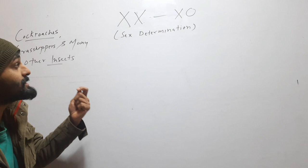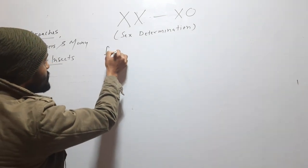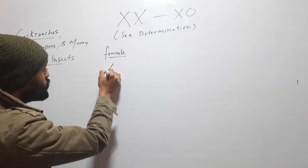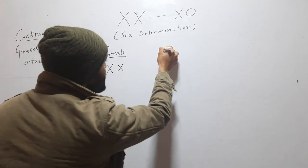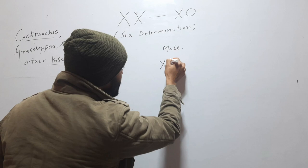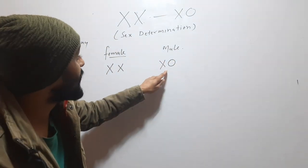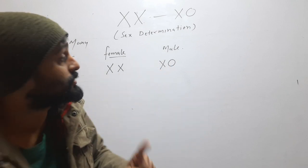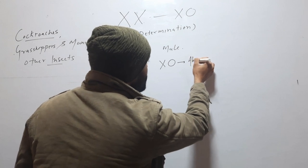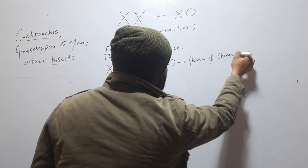In case of XX and XO type of sex determination, the female has 2X chromosomes. The male has 1X chromosome. Here O means nothing — it means the male has only 1X chromosome. O is showing the absence of a chromosome.